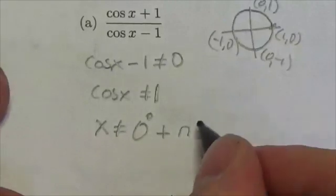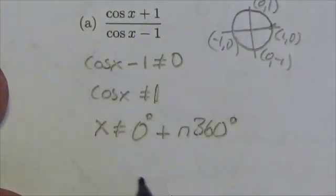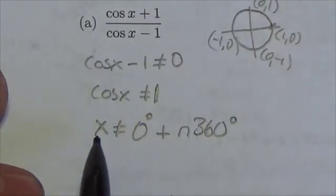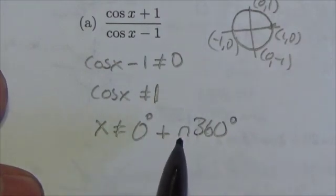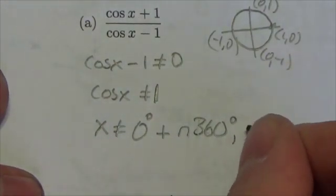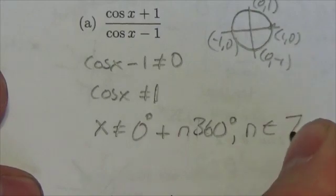This repeats 360 degrees. Cosine repeats every 360. So x cannot be allowed to equal 0 plus n times 360 where n is an element of the integers.